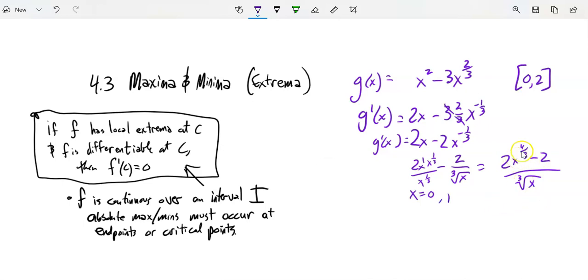Also, if I set this equal to 0 up top, X would be 1. So there's my two critical points. I also have my endpoints. Oh, plus or minus 1. Yeah, plus or minus 1. Because I'm taking it to the 4th power. So a negative 1 would work there as well. 0 and 2. So there's my endpoints. So let's test them all and see what happens.